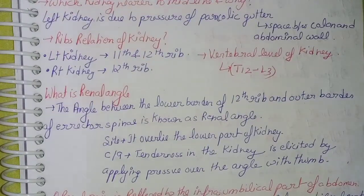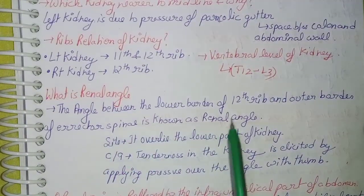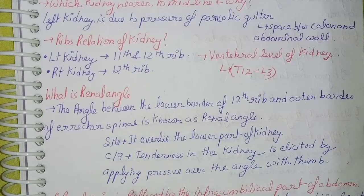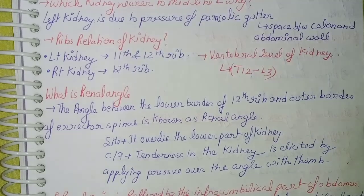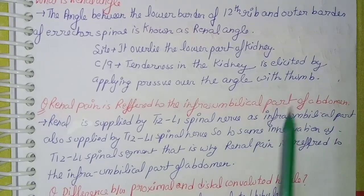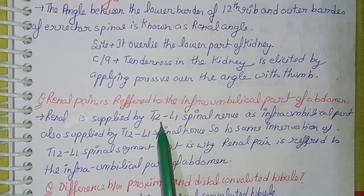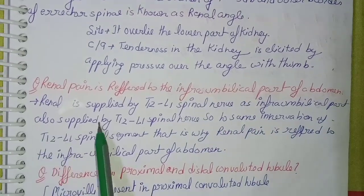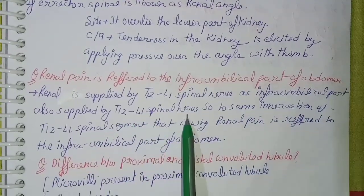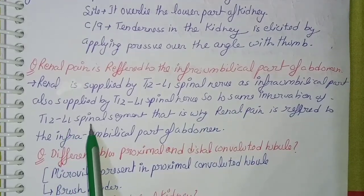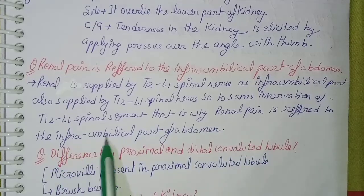The renal angle is the angle between the lower border of the 12th rib and the outer border of the erector spinae. It overlies the lower part of the kidney. Tenderness in the kidney is elicited by applying pressure over this angle with the thumbs. Renal pain is referred to the infraumbilical part of the abdomen because the kidney is supplied by thoracic 12 to lumbar 1 spinal nerves, the same innervation as the infraumbilical part of the abdomen — that is why renal pain is referred there.